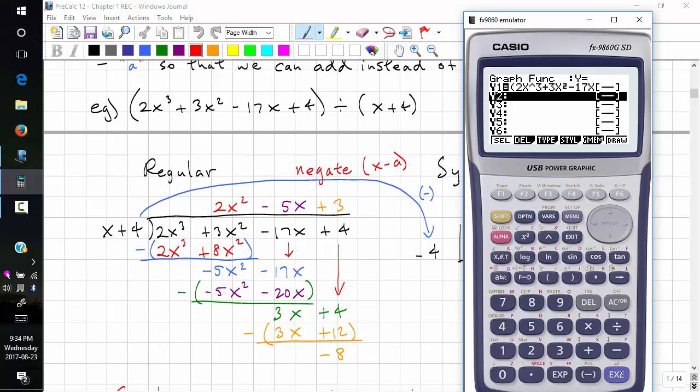And our second equation is going to be our quotient plus our remainder over the divisor. So we don't need brackets around this because it's not a numerator or denominator. 2x squared minus 5x plus 3, and adding a negative, we're just going to use subtract 8 divided by bracket, x plus 4.